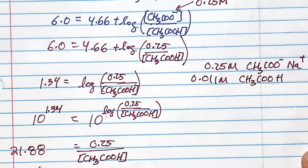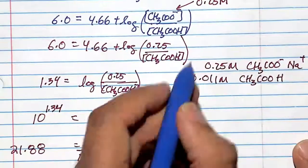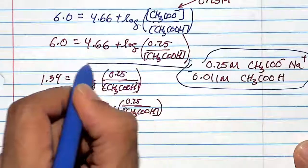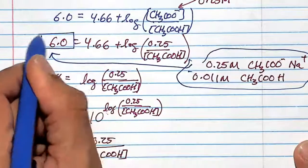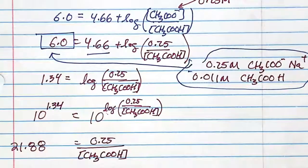If I add 0.011 molar of acetic acid, we'll have a buffer whose pH is going to be 6. The combination produces a buffer whose pH is 6, based on a pKa value given to us at 4.66.